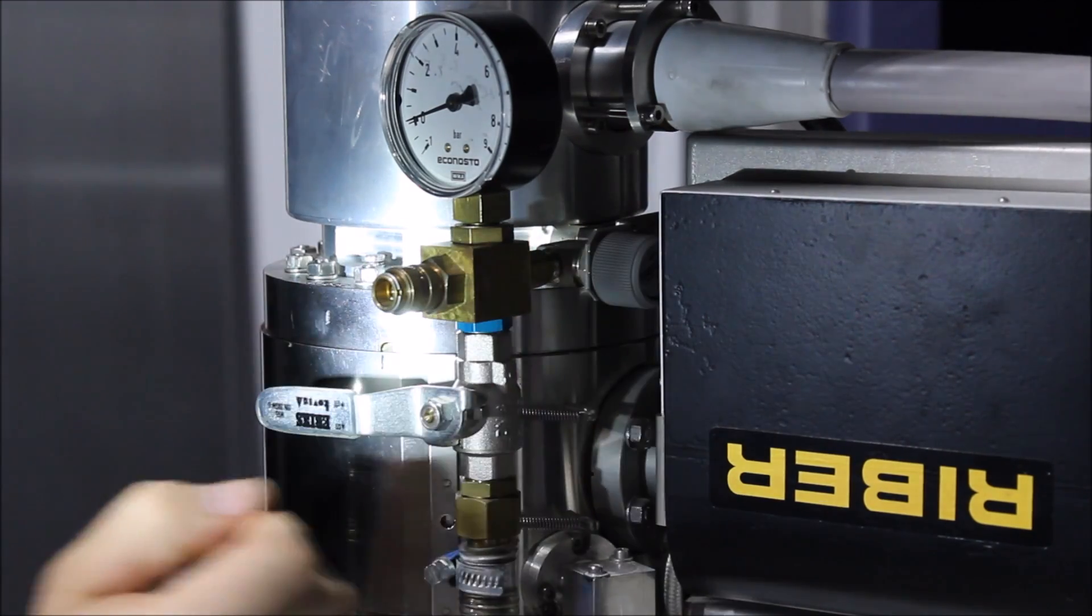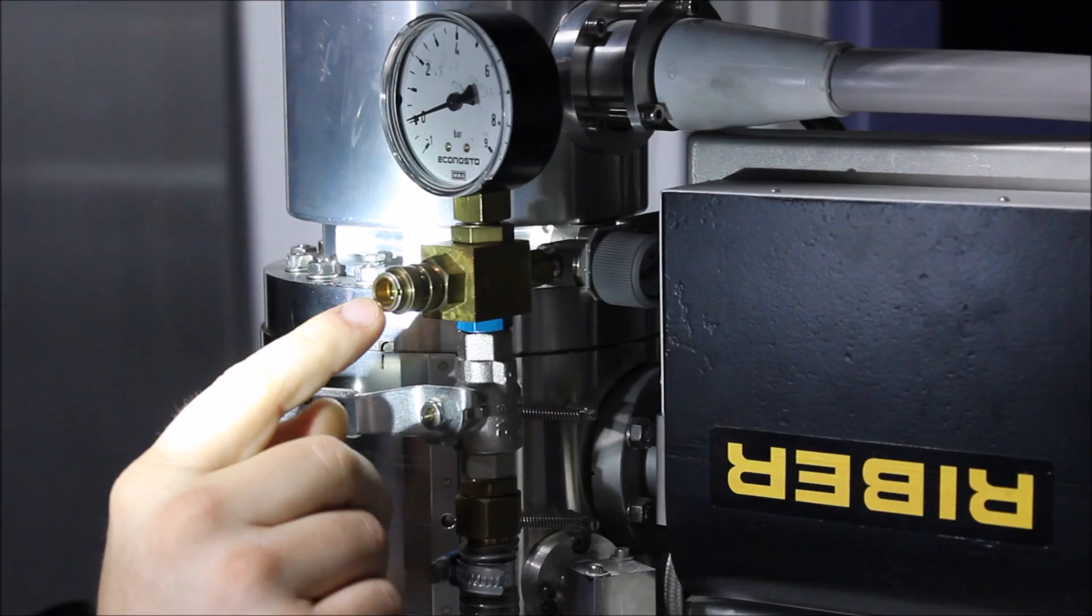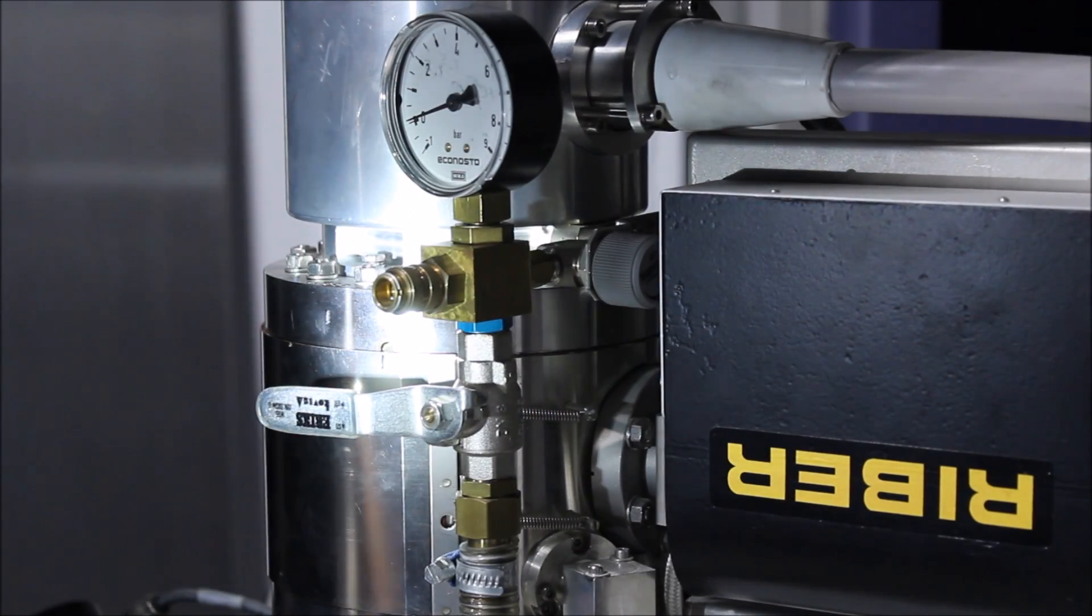Now that the bleed line assembly is securely attached we're going to use the quick connect and attach our SF6 bottle.